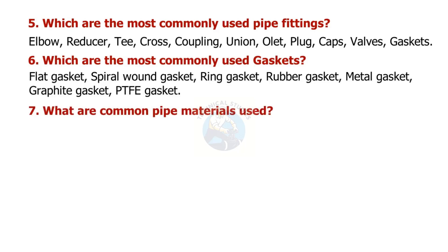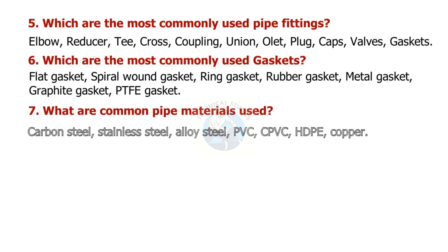What are common pipe materials used? Carbon steel, stainless steel, alloy steel, PVC, CPVC, HDPE, and copper.